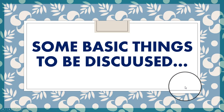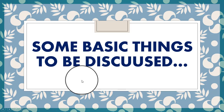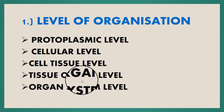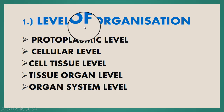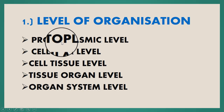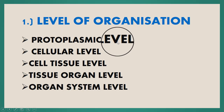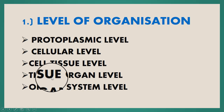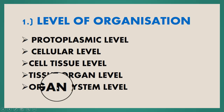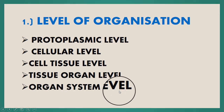Now we will discuss the level of organization. Depending upon the degree of complexity, there are five different types of organizations in animals: first, protoplasmic level; second, cellular level; third, cell tissue level; fourth, tissue organ level; and fifth, organ system level. We will discuss each one briefly.